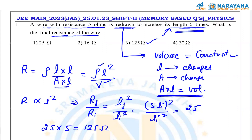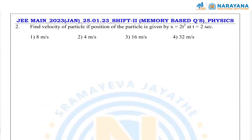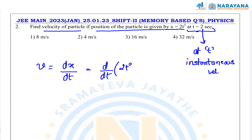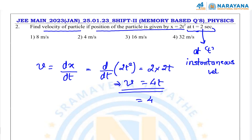Option 3 is the correct answer. Next question: we have to calculate the velocity of a particle. We are given the position and need the value at t = 2 seconds. When we talk about velocity at some time t, we want instantaneous velocity. Instantaneous velocity is the rate of change of position, so it is the derivative. d/dt of 2t² = 2 × 2t = 4t. Putting t = 2: velocity = 4 × 2 = 8 m/s. Option 1 is the correct answer.